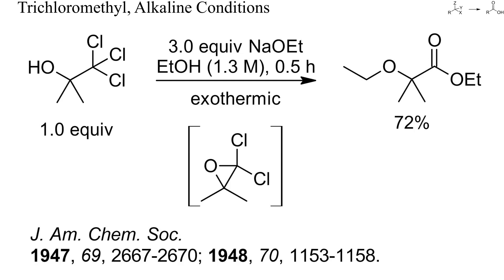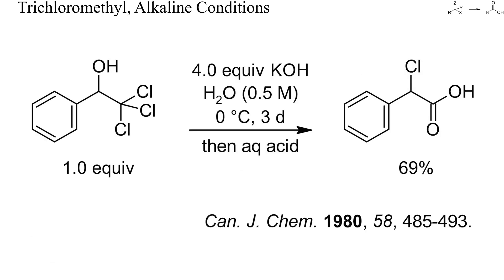Alpha-trichloromethyl alcohols show a unique reactivity caused by their easy base-induced cyclization to dichlorooxiranes. The starting alcohol of this example, prepared from trichloromethyl anion and acetone, readily reacted with ethanolic sodium ethoxide to an alpha-ethoxyethyl ester. At low temperature, it has even been possible to prepare alpha-chloro acids. This is a difficult reaction because of the easy displacement of chloride by hydroxide. But many other nucleophiles have been used successfully to prepare alpha-substituted acetic acids and esters from trichloromethyl alkanols.